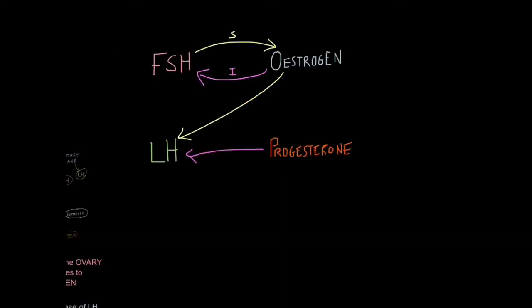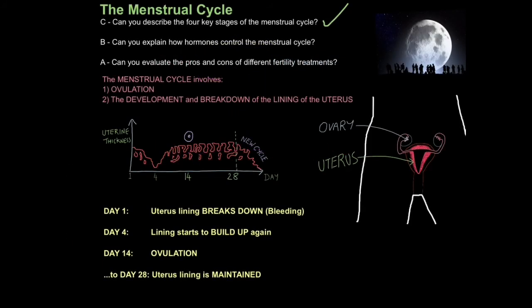A quick recap: FSH stimulates the production of oestrogen. Oestrogen, however, inhibits FSH — which is important when we look at birth control. Oestrogen stimulates the production of LH, and progesterone inhibits LH. In fact, oestrogen and progesterone both inhibit FSH and LH, and that is how hormones control the menstrual cycle.